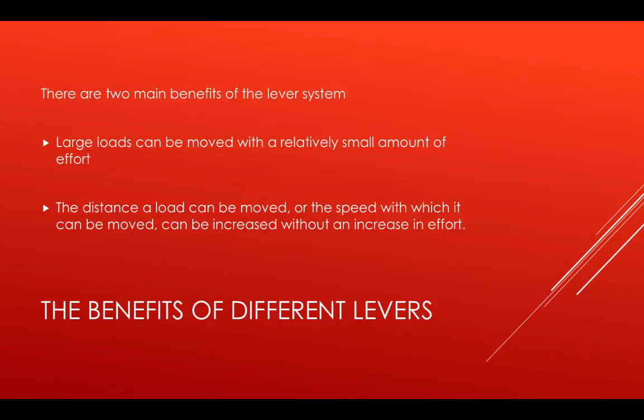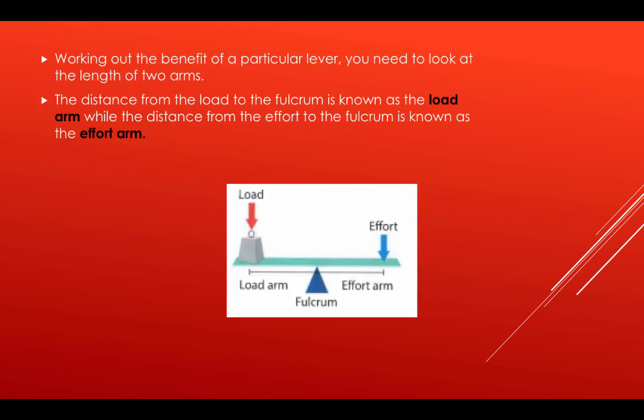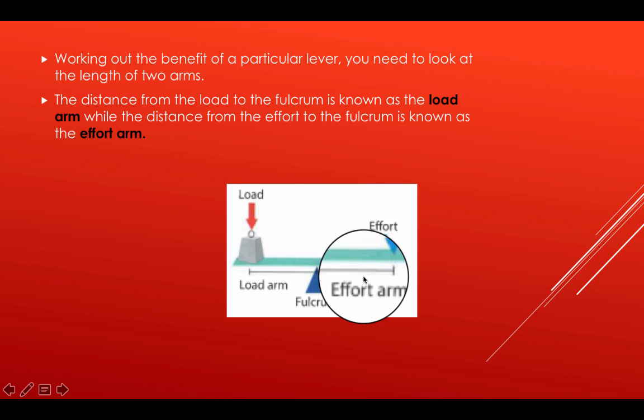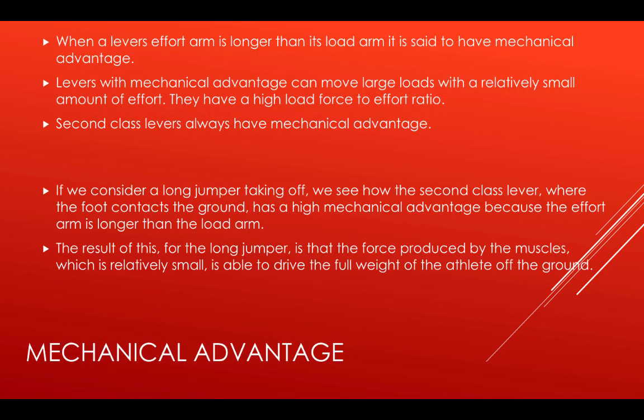There are two main benefits of the lever system. Large loads can be moved with a relatively small amount of effort. The distance a load can be moved, or the speed with which it can be moved, can be increased without an increase in effort. For the benefit of a particular lever, you need to look at the length of the two arms. The distance from the load to the fulcrum is the load arm, while the distance from the effort to the fulcrum is the effort arm. When the effort arm is longer than the load arm, it is said to have a mechanical advantage. Levers with a mechanical advantage can move large loads with small amounts of effort — they have a high load force to effort ratio.